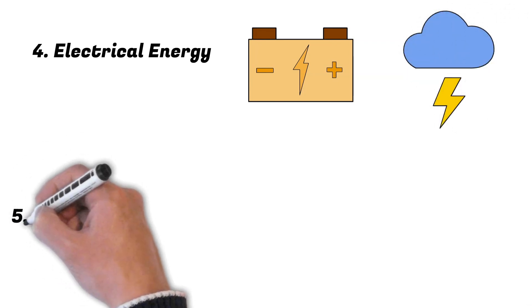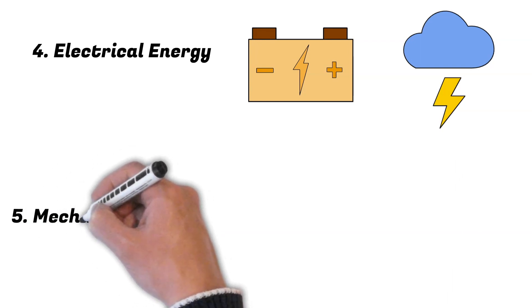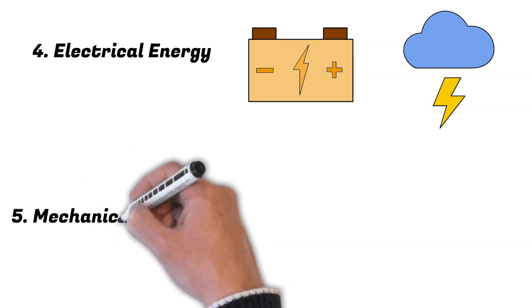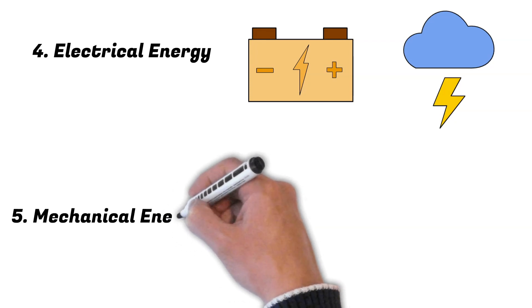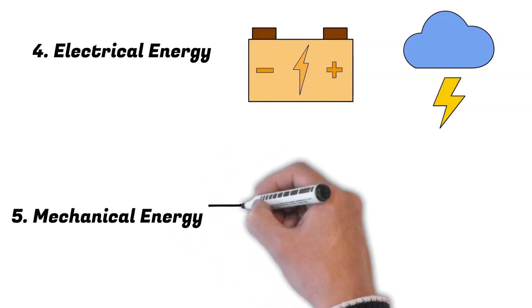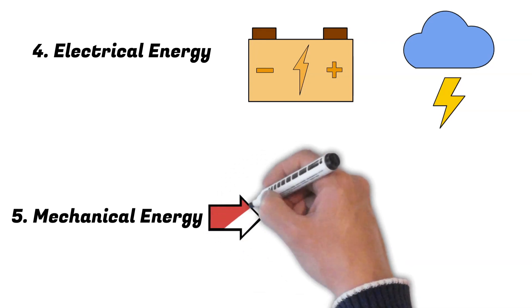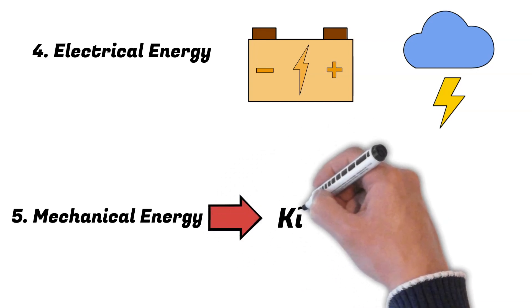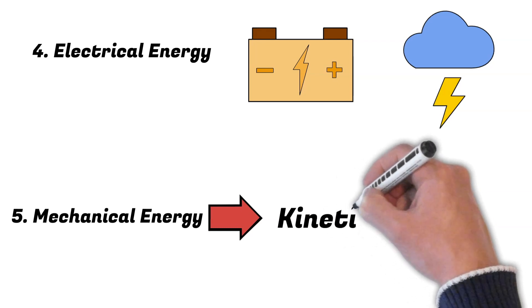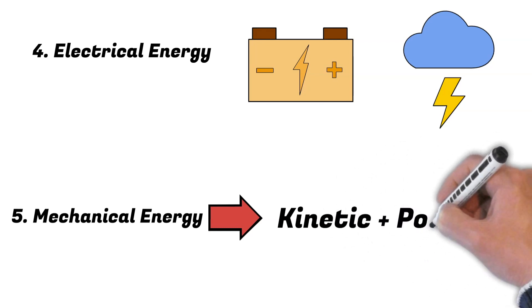And then last is mechanical energy. This is the sum, so the total of kinetic energy and potential energy, and we will talk about potential energy in a minute. So this is known as mechanical energy, the sum of the kinetic and potential energy.